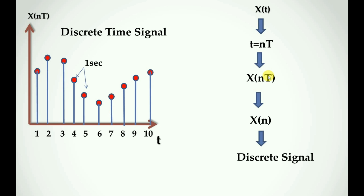So basically, this is the discrete time signal. We have the analog signal and we sample it with an interval time T equal to 1 second to generate the discrete time signal. The discrete time signal x(n) has values only at integer points and is not the same as the original analog continuous signal. That is all — thank you.